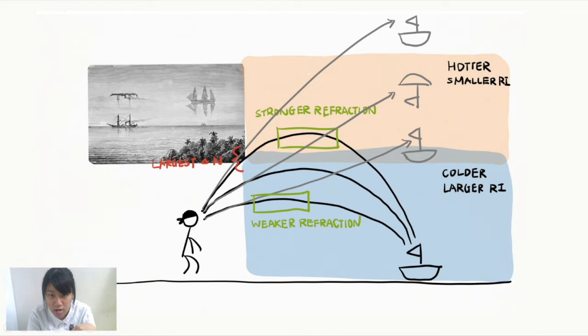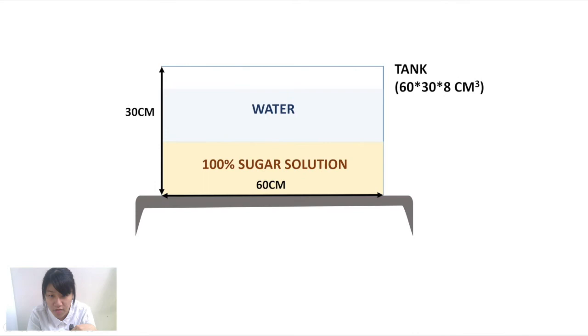But with this complexity, where can we see this type of mirage and how will this mirage look like? In our research, we started first from the reproduction of Fata Morgana.